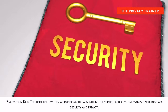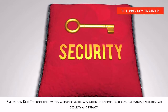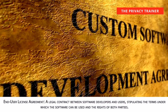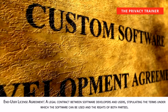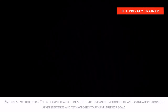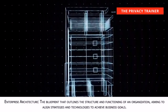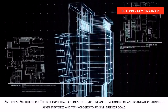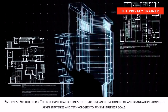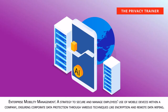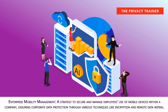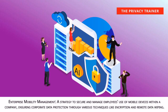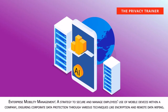Encryption key. The tool used within a cryptographic algorithm to encrypt or decrypt messages, ensuring data security and privacy. End user license agreement. A legal contract between software developers and users, stipulating the terms under which the software can be used and the rights of both parties. Enterprise architecture. The blueprint that outlines the structure and functioning of an organization, aiming to align strategies and technologies to achieve business goals. Enterprise mobility management. A strategy to secure and manage employees' use of mobile devices within a company, ensuring corporate data protection through various techniques like encryption and remote data wiping.